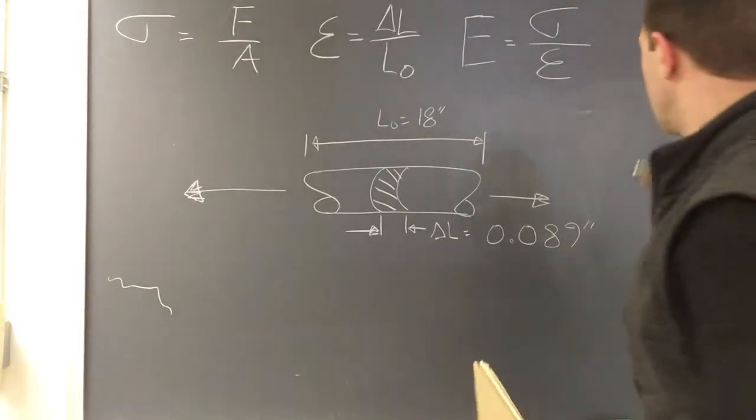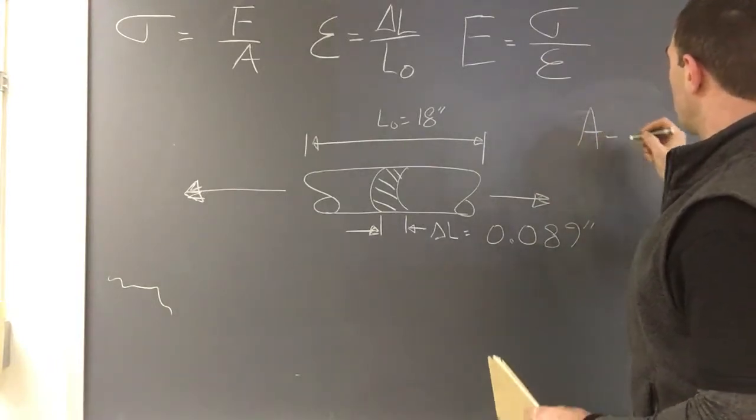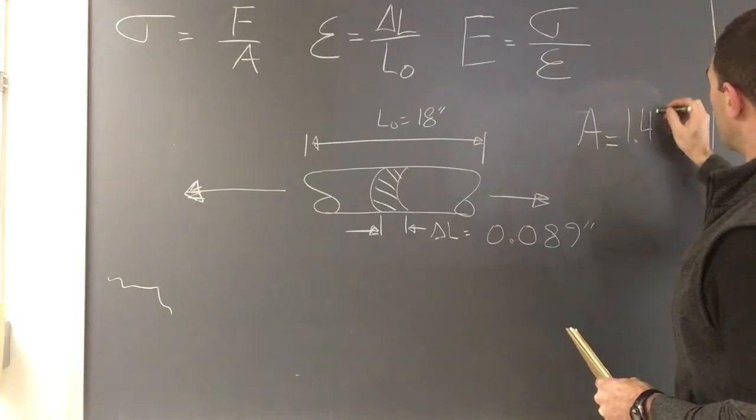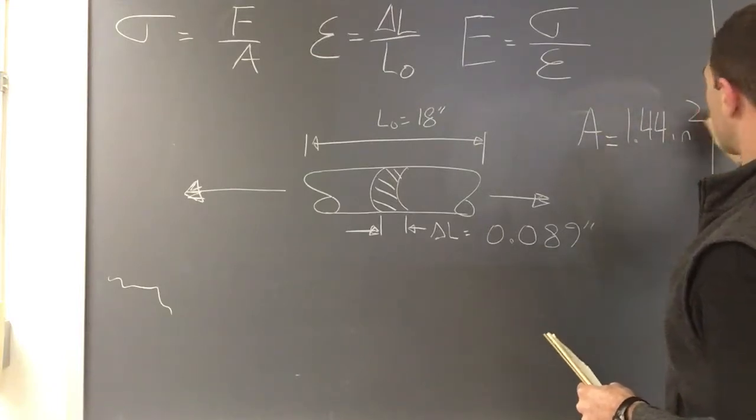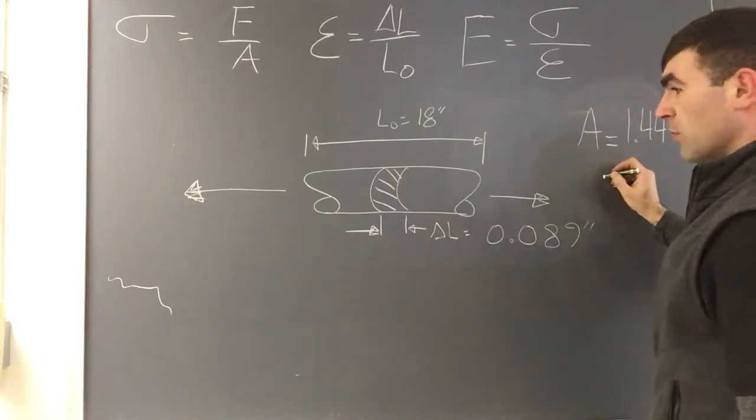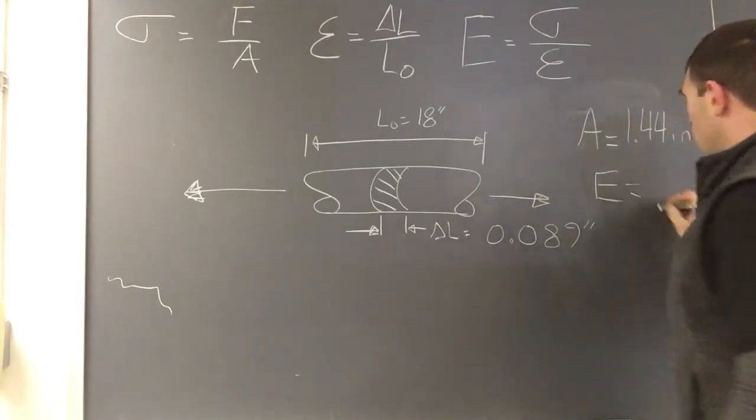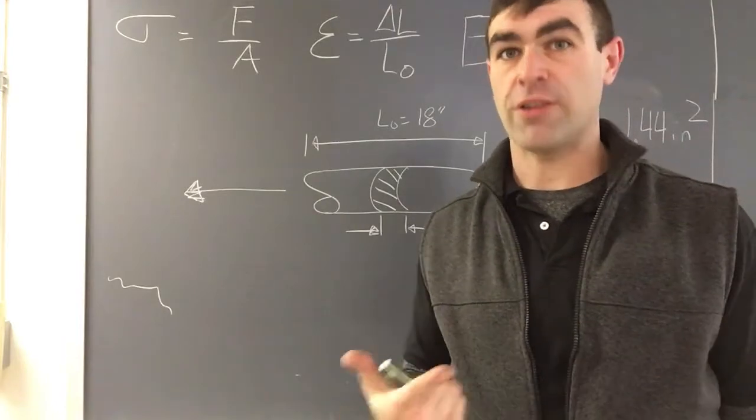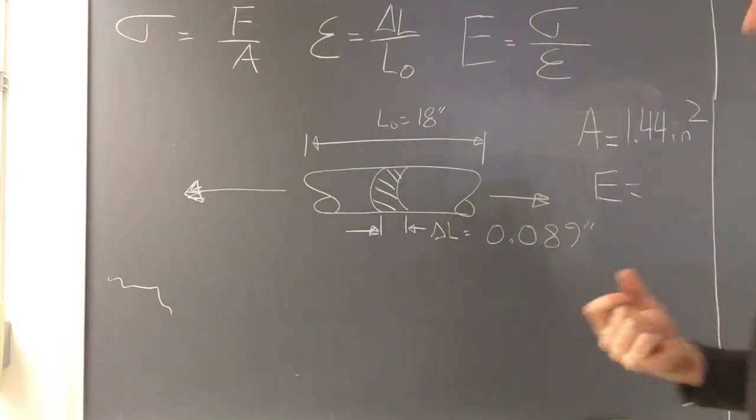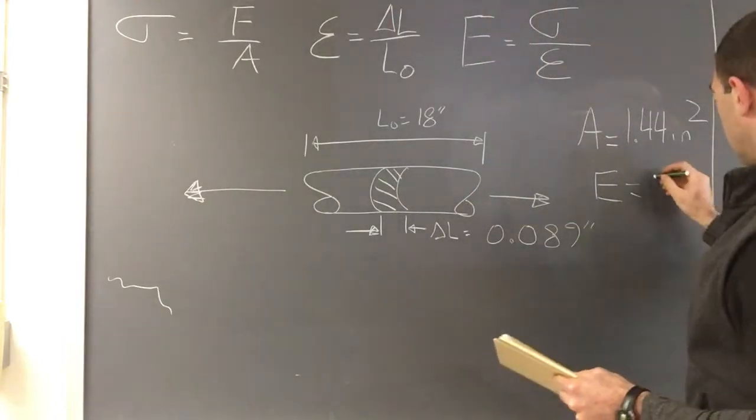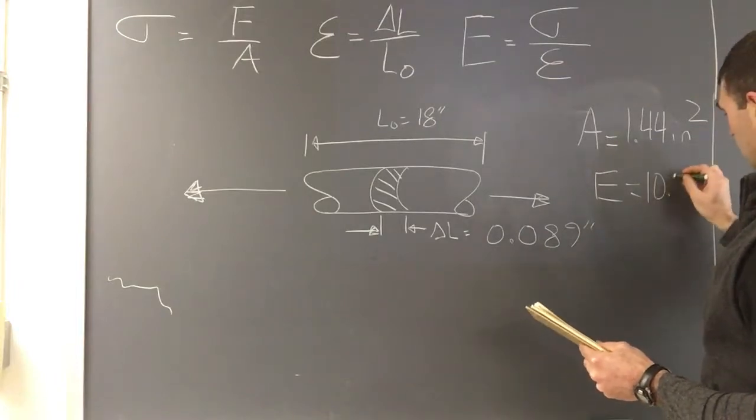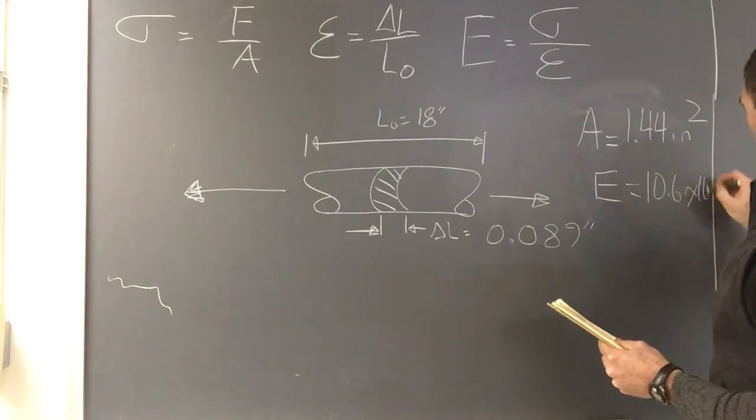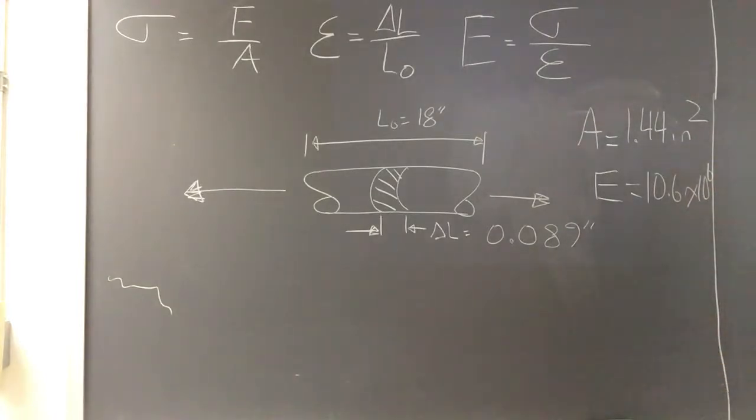In addition, we know the original area: 1.44 inches squared. And we know E, because we know it's aluminum, we can look up the modulus of elasticity for that material. In this case, it's going to be 10.6 times 10 to the 6, and that's psi.